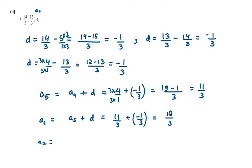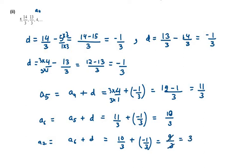Now A7. A7 will be A6 plus D. A6 is 10/3 and D is minus 1/3, so it will be 9/3, and 9/3 can be written as 3. So A5 is 11/3, A6 is 10/3, A7 is 3 — that's your answer for the second part.